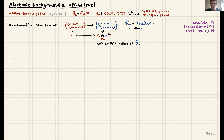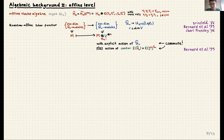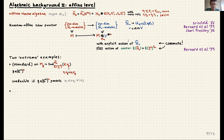Moreover, at the affine level there is extra structure: the center of the affine Hecke algebra (symmetric polynomials in Y's or Y-inverses) still acts on this tensor product over the Hecke algebra, and this action commutes with the quantum loop algebra action. This is a key difference from the non-affine level. So we get both an explicit quantum loop algebra action and an action of the center, commuting with each other — this starts to sound like the results I advertised.